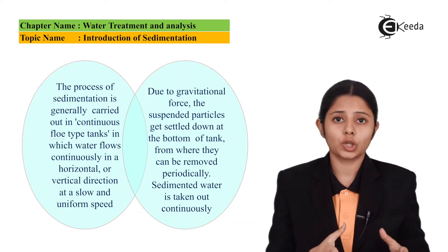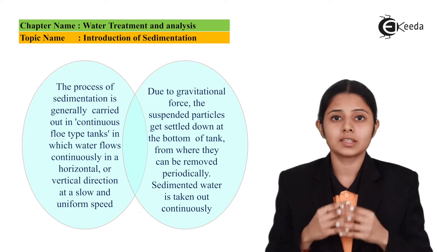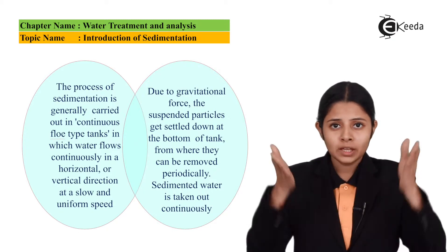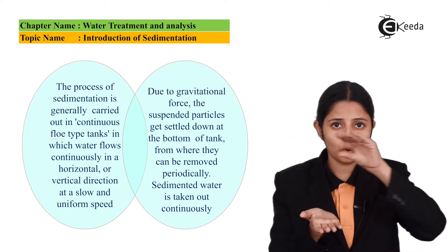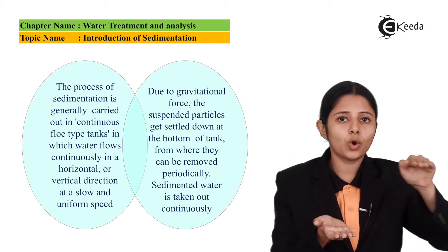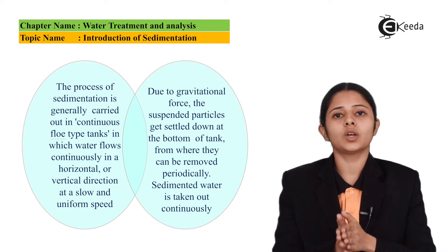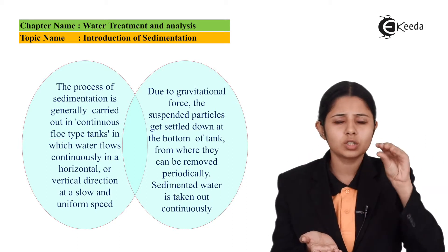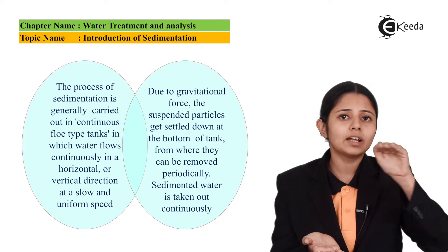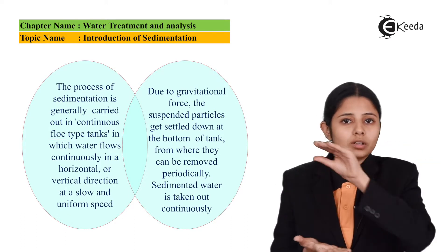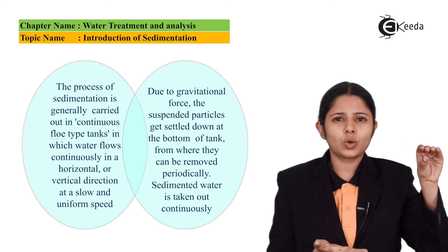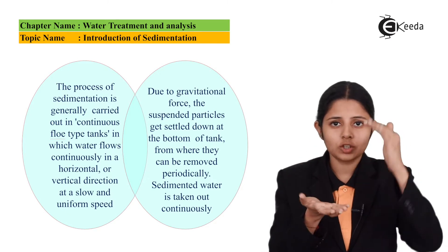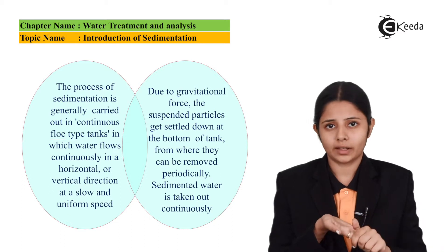The process of purification of water using sedimentation technique is done in continuous flow type tanks. The water flows into these tanks and can flow either horizontally or vertically depending on the type of tank. When the water flows horizontally, it flows at a very slow, uniform speed. As the water flows inside the tank at that slow speed, all the sediments or particles which are heavier than water settle down to the bottom of the tank.